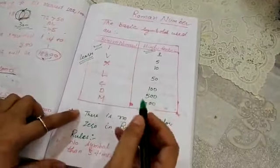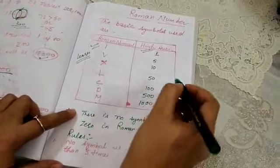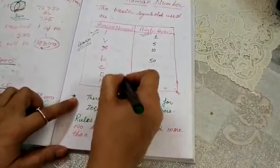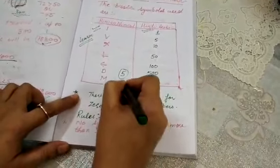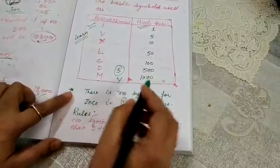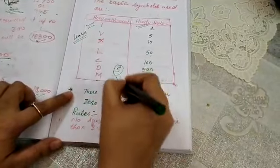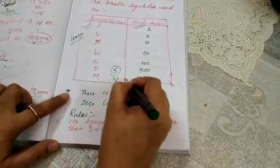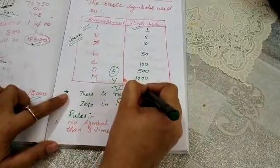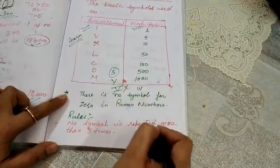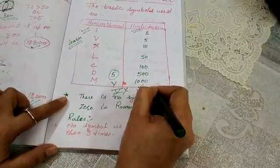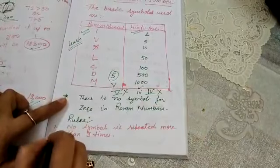If you have to write 5, we will use V, but V we will write like this — not like this. This is not the right way. For 4, we are writing like this — this is the right way. If we are writing like this, this is the wrong way.